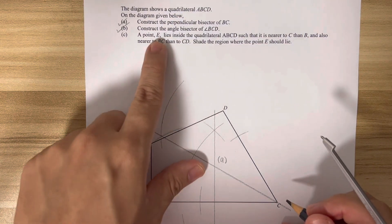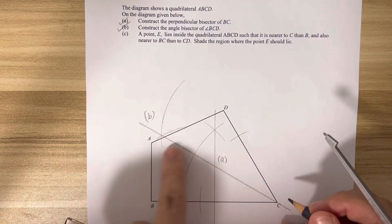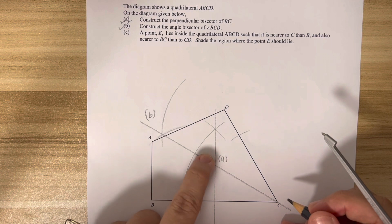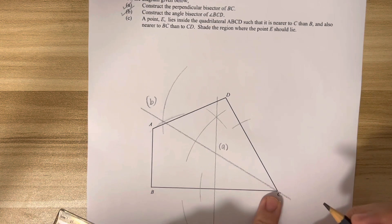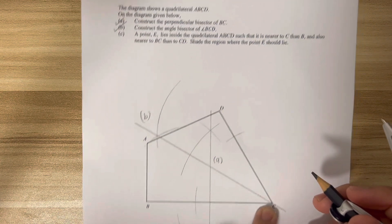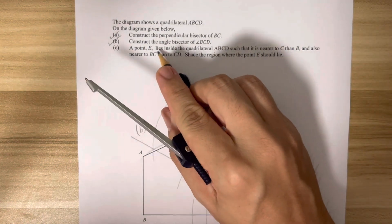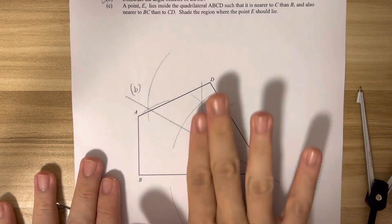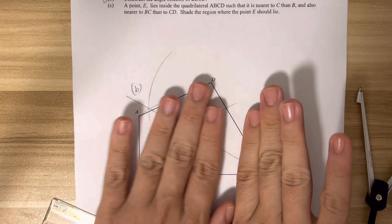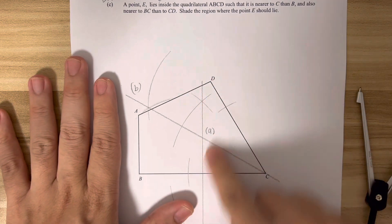Part C: there's a point E that is inside this ABCD, but it is nearer to C than B. And also nearer to BC than CD. So now I know this E must be this side here, it cannot be here. So definitely somewhere here.